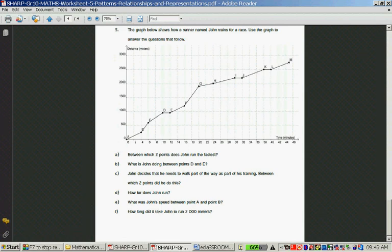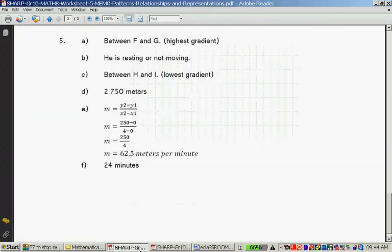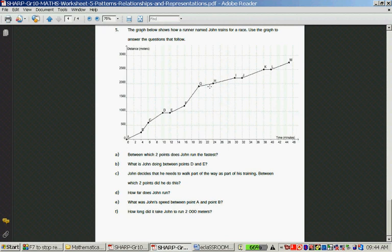John decides that he needs to walk part of the way as part of his training. Between which two points did he do this? Walked. I think there's a walking. Might be between G and H. That's quite slow. I think that's the flat part. Between G and H. E and F can also be walking. But G and H. H and I. J and K. L and M might be walking. Let's look at the results. Between H and I. That's the lowest gradient. But G and H is also quite flat. When the gradient is flat, then it means his progression was slower. How far does John run? From A to M, 2750 meters.